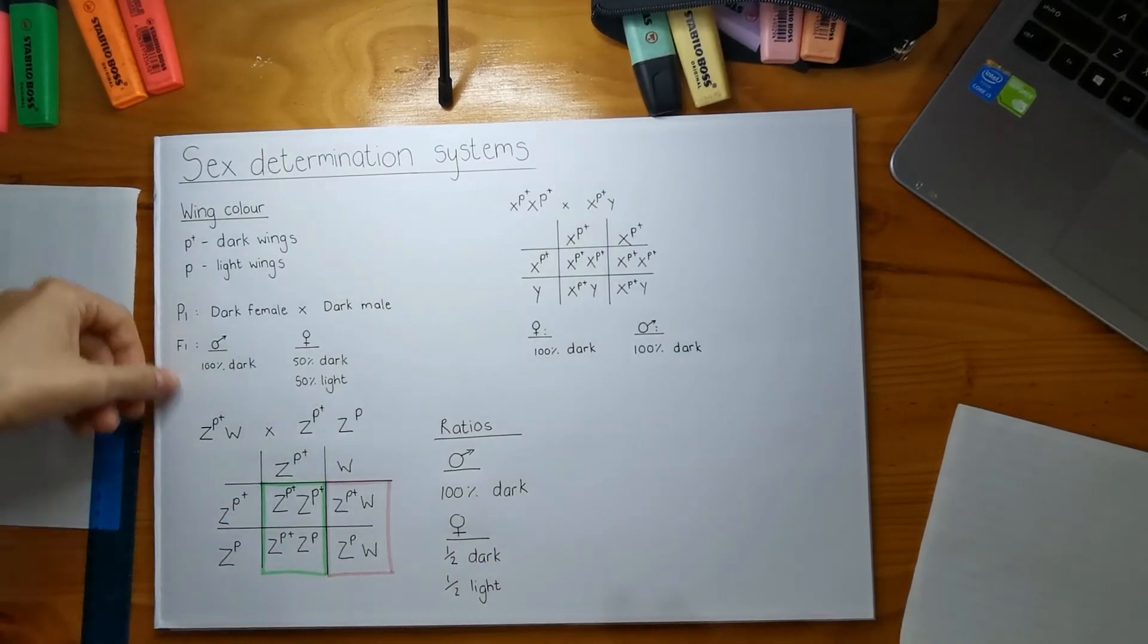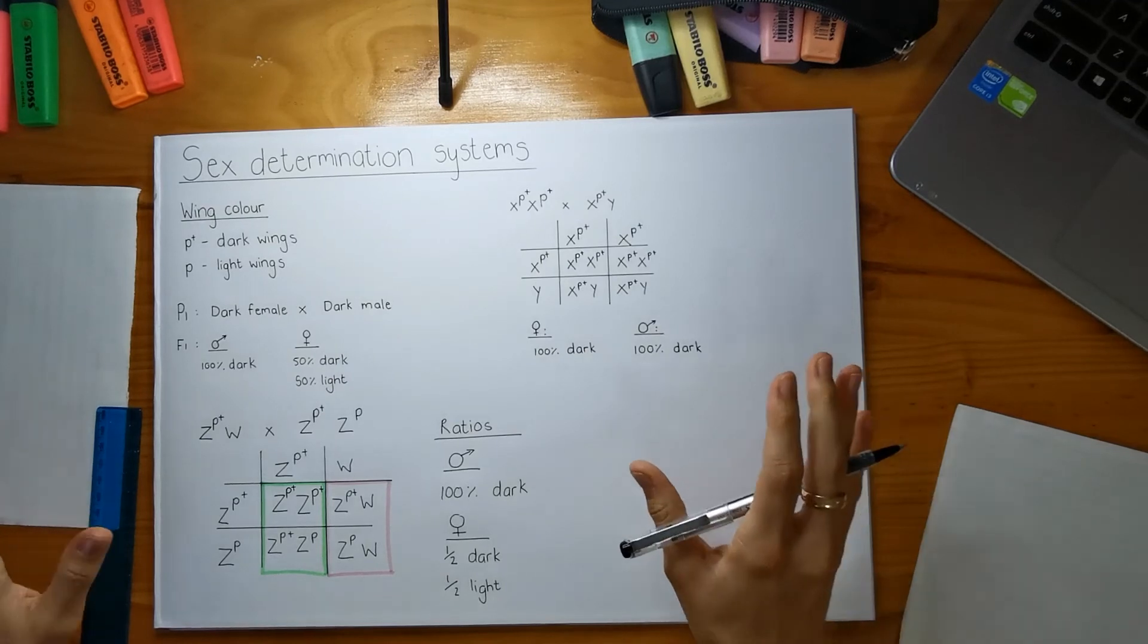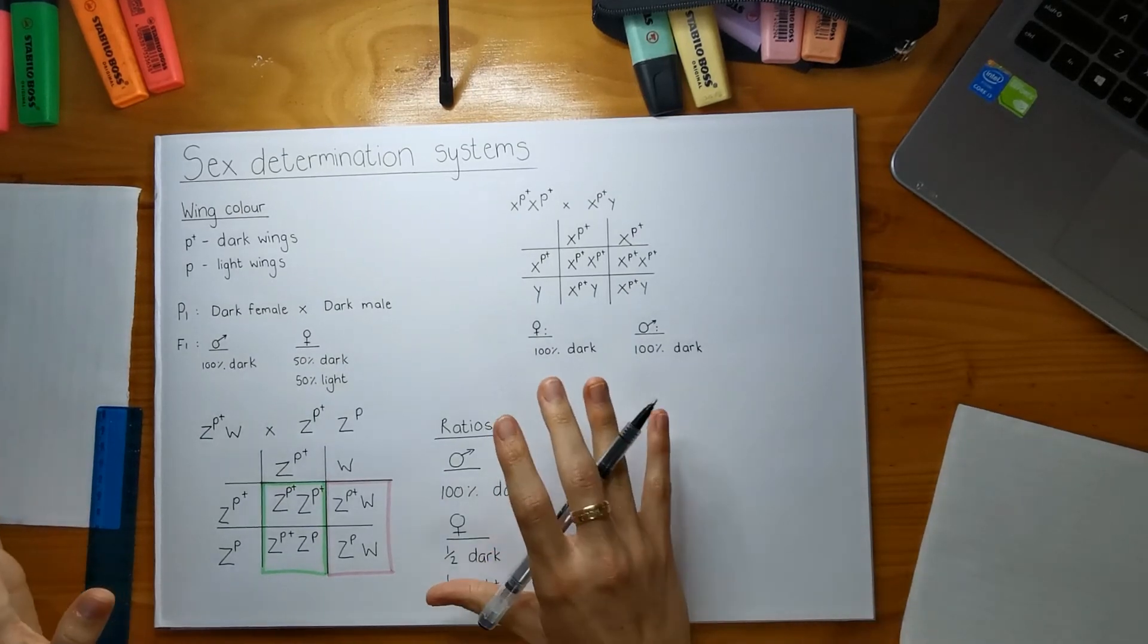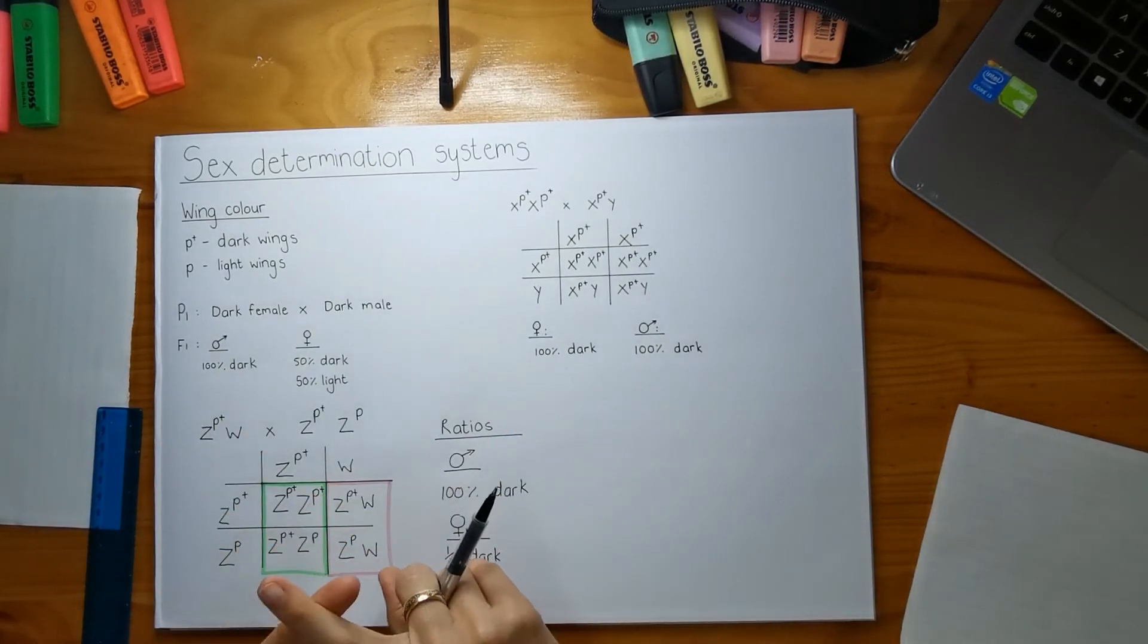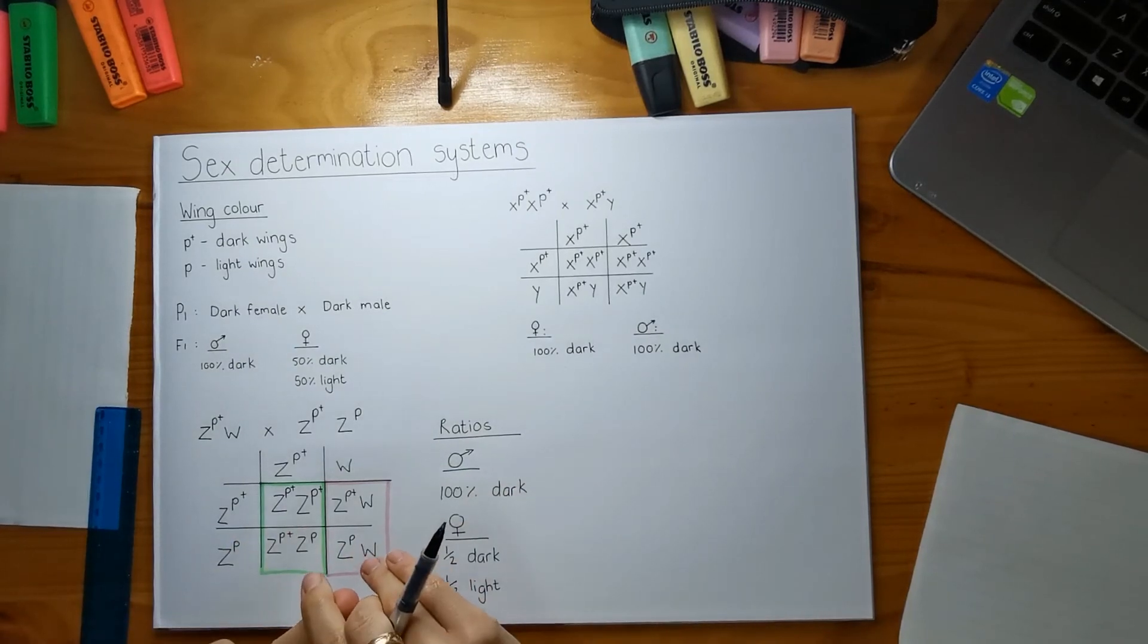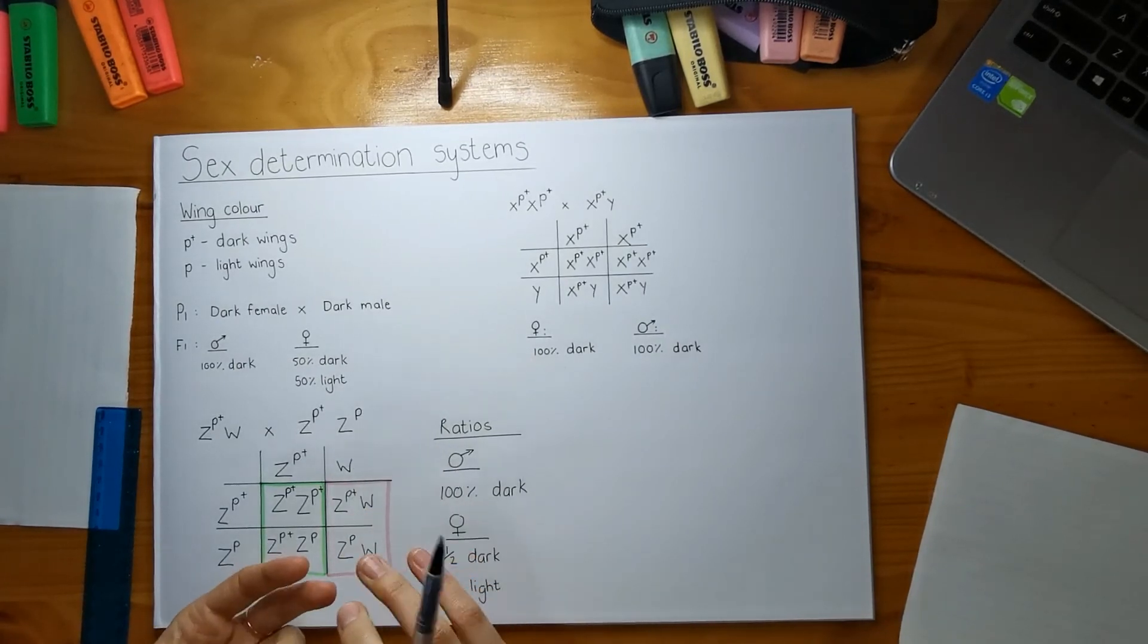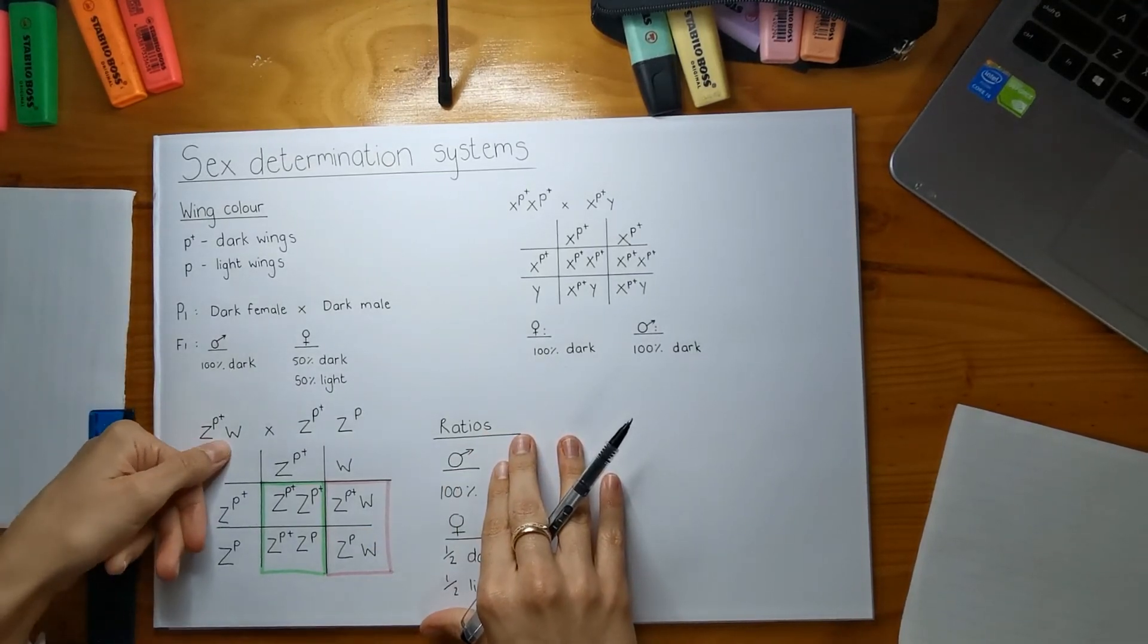This matches up with our F1 progeny. So we have cracked the code and now we have figured out that the reason for this type of inheritance is because moths adhere to the ZZ/ZW system of sex chromosomes. That's number one what we have to explain. We also have to explain that the males are the homogametic sex, so their sex chromosomes are exactly the same. They have Z and Z. And then the females are the heterogametic sex, meaning that they have one Z chromosome and one W chromosome.